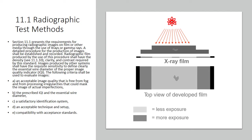Section 11.1 addresses clarity and contrast required by this standard. Images produced by other systems shall meet the sensitivity requirements to clearly show the essential wire diameter of the proper Image Quality Indicator (IQI). Criteria for evaluating images include: an acceptable image quality free of fog and processing irregularities that could mask actual imperfections; the prescribed IQI and essential wire diameter; a satisfactory identification system; an acceptable technique and setup; and compatibility with acceptable standards.